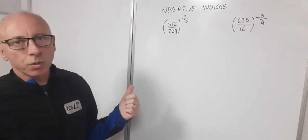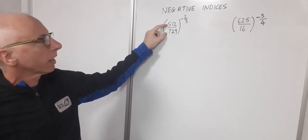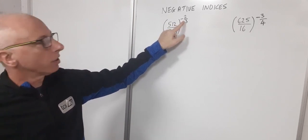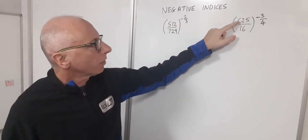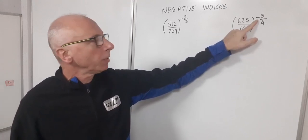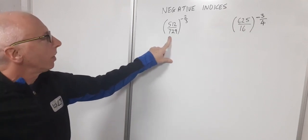So here we're going to look at a couple of examples of negative indices. So here I've got a fraction in some brackets raised to a negative power which is also a fraction, and the same here I've got a fraction in the brackets raised to a negative indice which is also a fraction. So let's start with this one first.